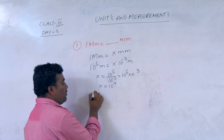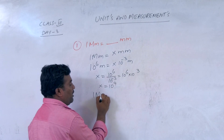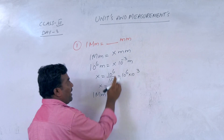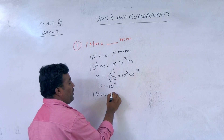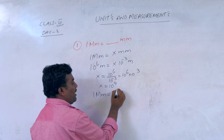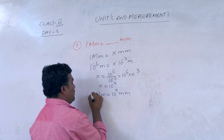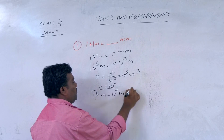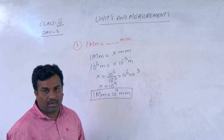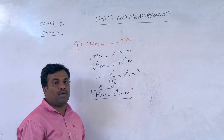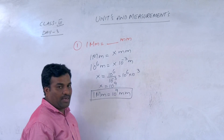Therefore, 1 megameter equals 10 to the power of 9 millimetres.